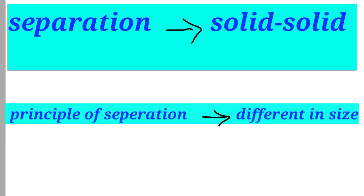Sieving is used for solid-solid particle mixtures where the components are different in size. The principle of separation is based on size difference.